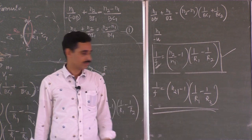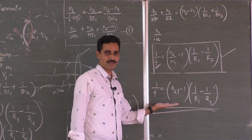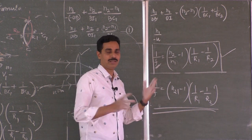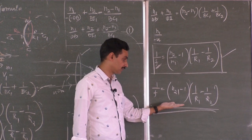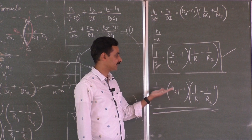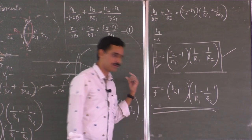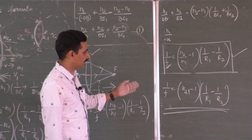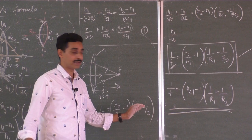Very important formula. Focal length of a lens depends on the refractive index of the medium of the lens (N2), the refractive index of the surrounding medium (N1), and the radii of curvature of the two surfaces. We are going to use this formula in many problems. Better to know the theory behind the formula — what is the significance of all these values — rather than just memorizing it.